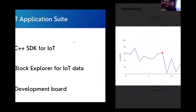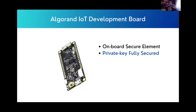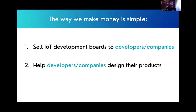Going back to the presentation, one thing I want to emphasize is the Algon IoT development boards. Currently we are using development boards from the industry, but these boards are not really suitable for blockchain applications, because we need a way to store the private key of the wallets — very similar to Ledger hardware devices, where the private key is stored in a secure element. The way we make money is simple: we sell IoT development boards to developers and companies, and we help them design their products.